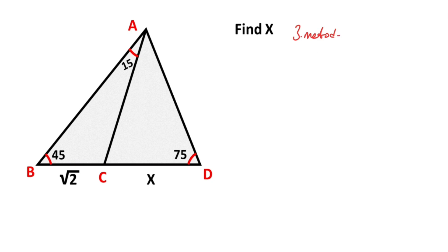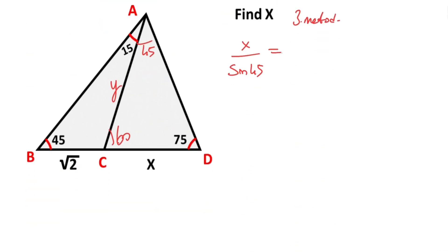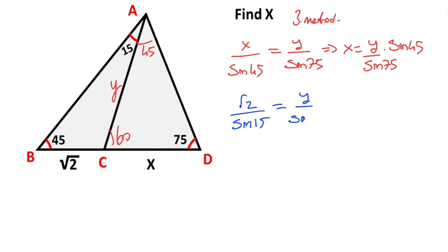Now we will calculate the value of x using the third method. Let's write 45 degrees and 60 degrees here, and call this side y. Focusing on this triangle, we can apply the sine rule: x over sine 45 degrees must equal y over sine 75 degrees, so x equals y times sine 45 degrees over sine 75 degrees. Focusing on triangle ABC, by the sine rule: root 2 over sine 15 must equal y over sine 45 degrees, so y equals sine 45 degrees times root 2 over sine 15.